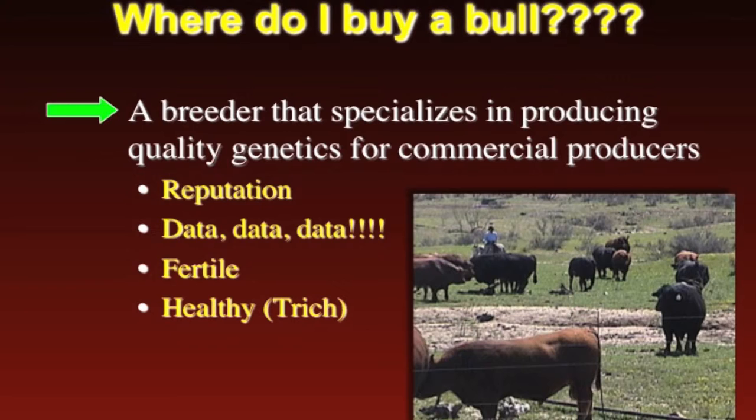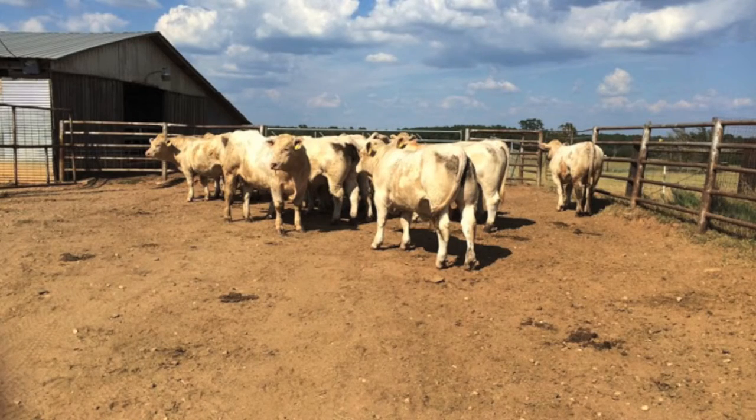We already mentioned data — those bulls need to be fertile, healthy, and free of disease. Whether you find a bull from a breeder selling 500 to 1,000 bulls, or a local producer marketing 20 or 30 bulls per year, both are viable options — there are just fewer to choose from with the smaller operator. Make sure they've got a reputation, data, fertile bulls, healthy bulls, and bulls that are structurally sound and functional so they can go out and breed those cows for you.